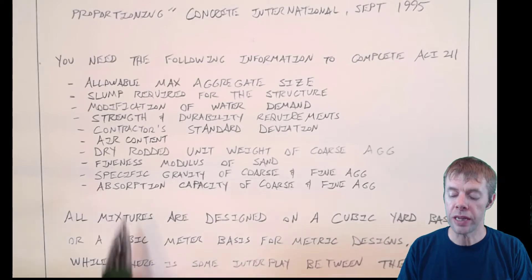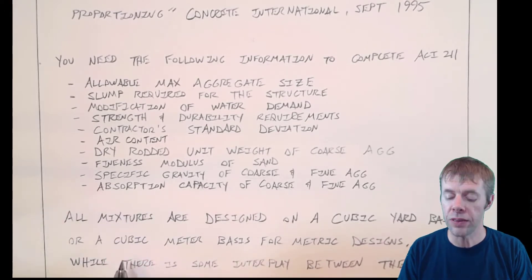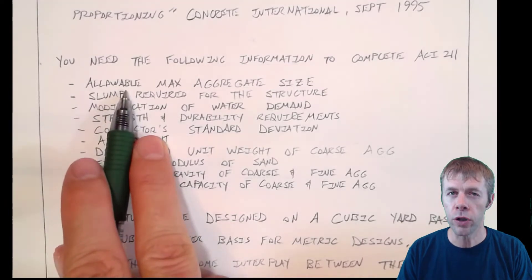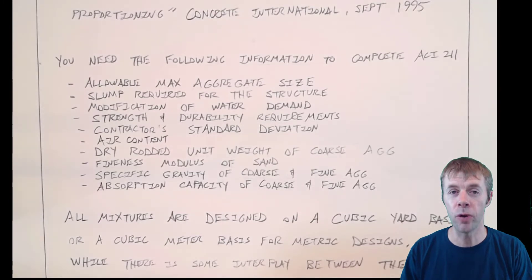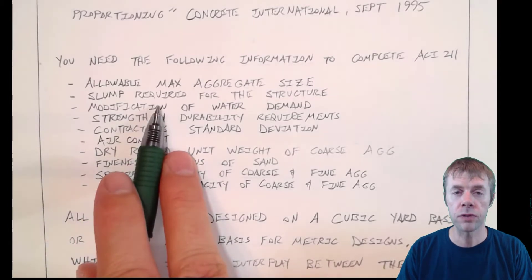In order to do the ACI-211 procedure, you need these things. You need to understand what you're going to build and what is the allowable maximum aggregate size that you can use to build that. We've talked about that in previous videos.